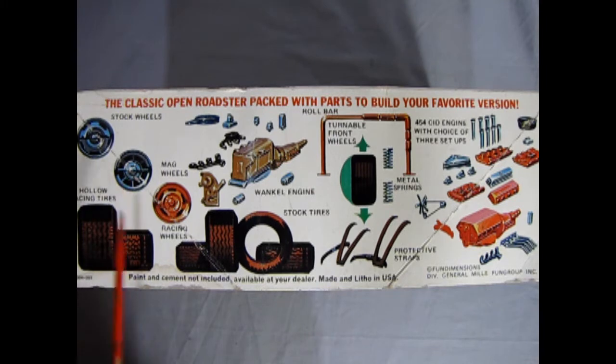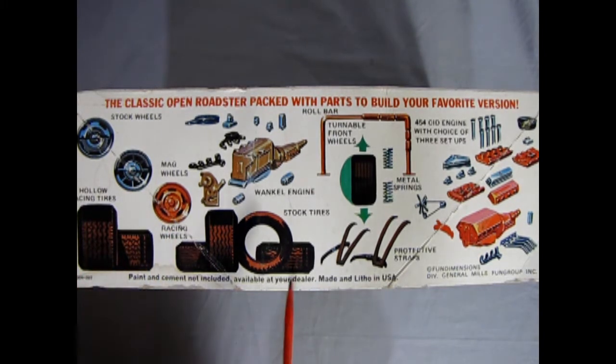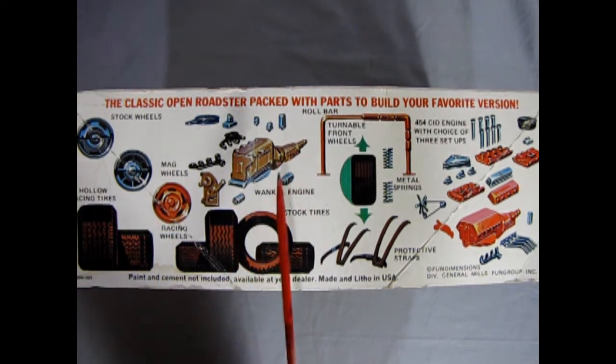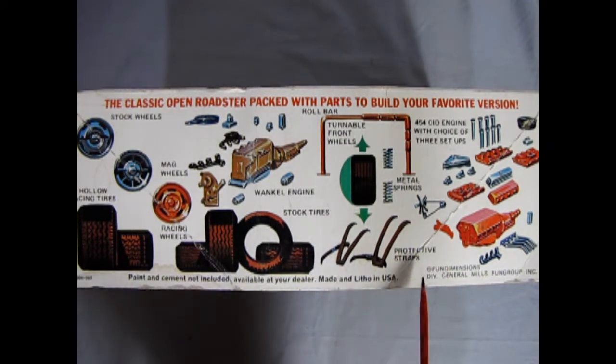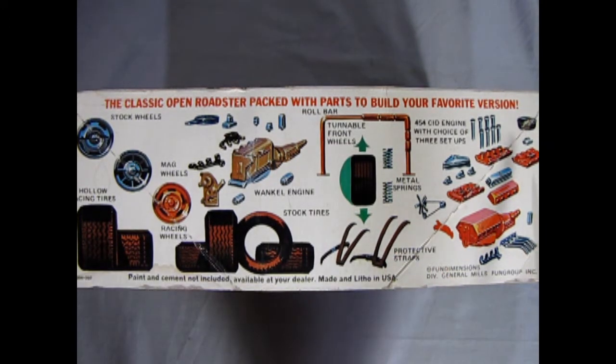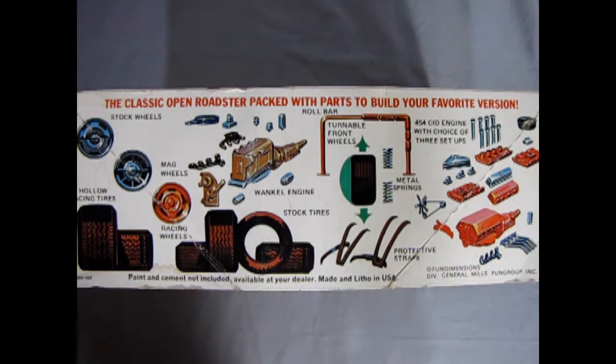Stock wheels, mag wheels, racing wheels, hollow racing tires, a Wankel rotary engine, then we have posable front wheels, as well as a roll bar, metal springs, protective straps which are your seat belts, and then we've got this multi-piece drag racing motor as well.